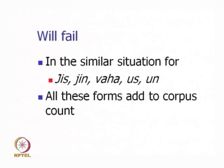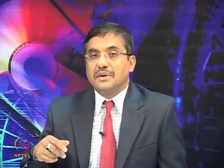Other forms of Jo like Jis, Jin, Wo, Us, Un can fail in similar situations, and all these forms are very frequent in the corpus. Therefore, all these errors can accumulate and you could have a situation where accuracy is pretty low, because simple rules cannot disambiguate these situations.